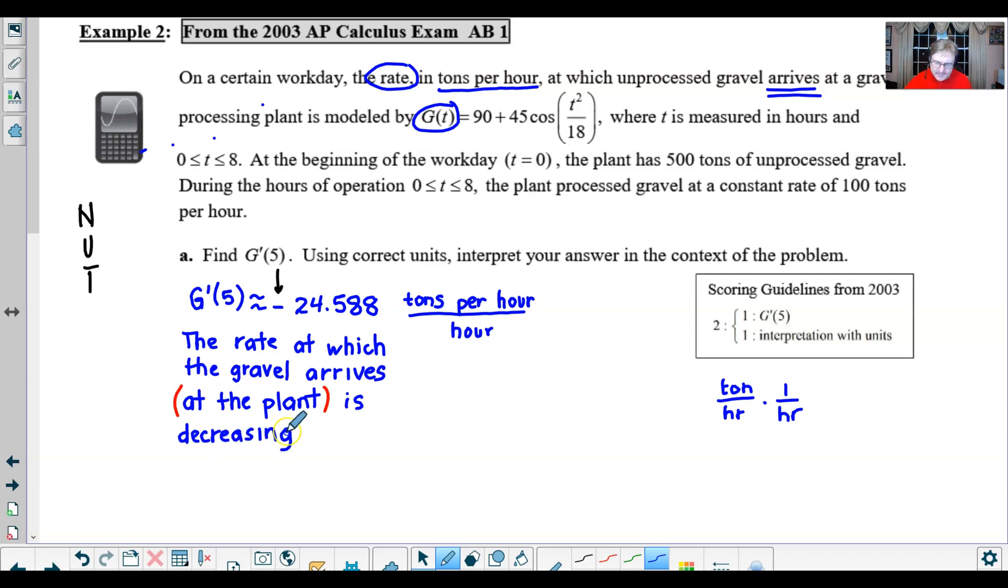So you're really getting that context. All I need now is the answer. Well we know it was decreasing by 24.588 and the label would be tons per hour squared.